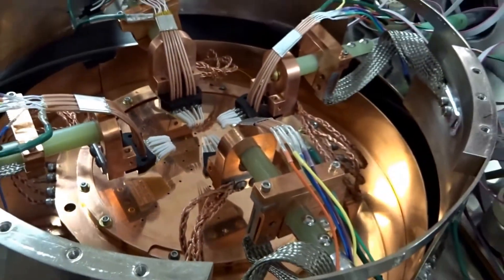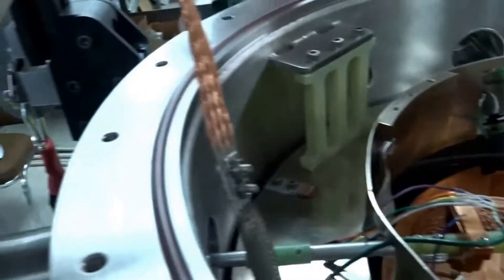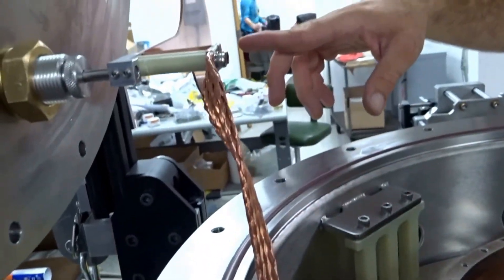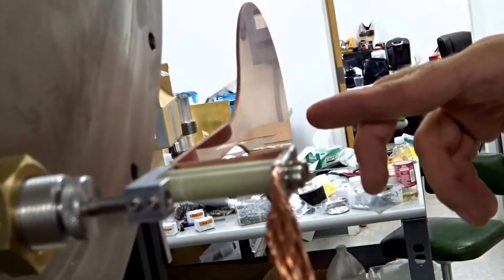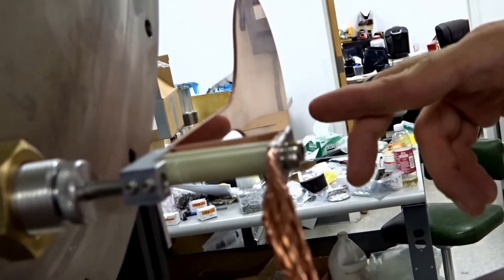The plate that goes down on top of the system has a hole in the center for a viewport which has a radiation shielded shutter that can go over the top of it for maximum cooling. This shutter is also cooled by a braid which is attached to the radiation shielding.